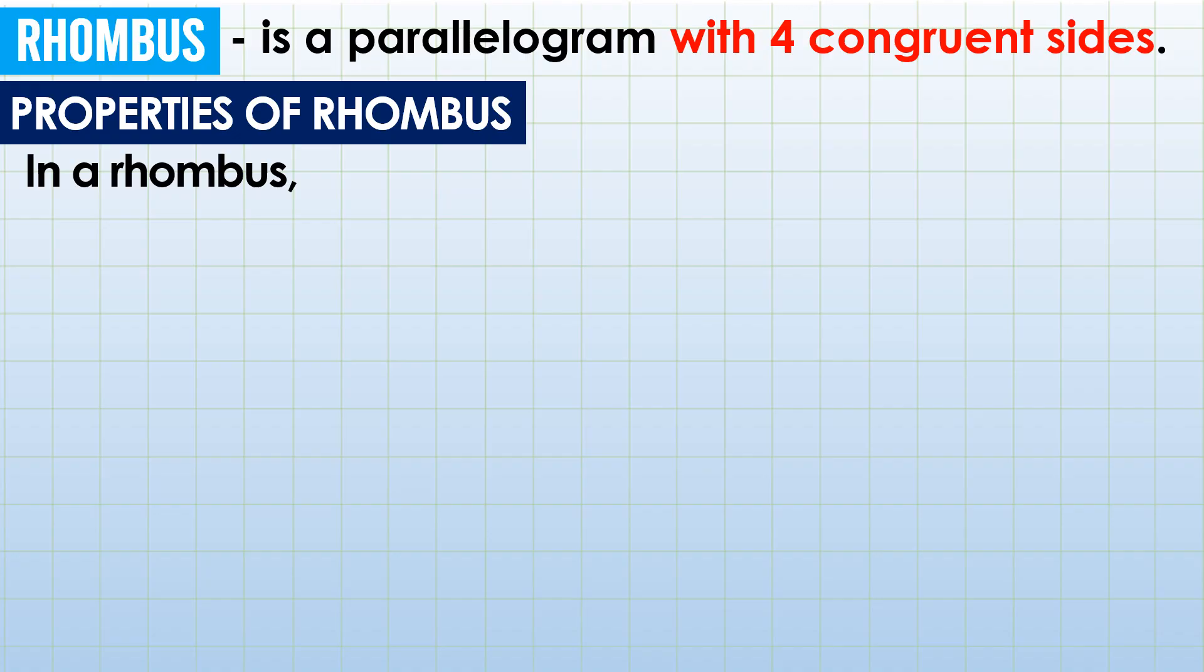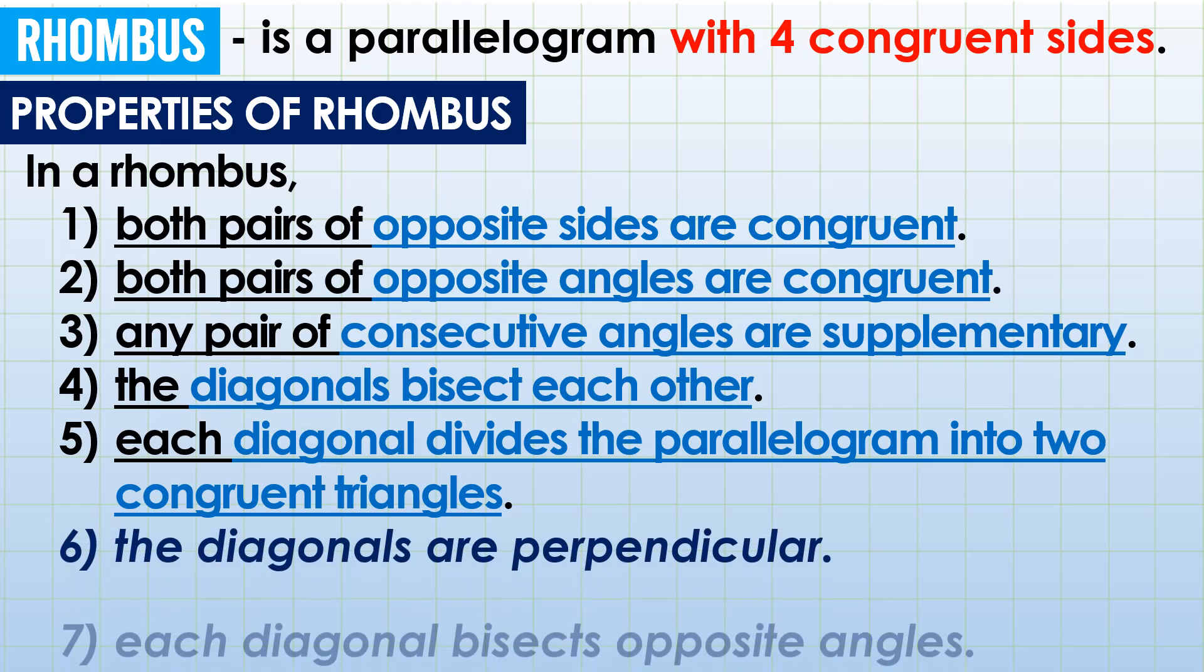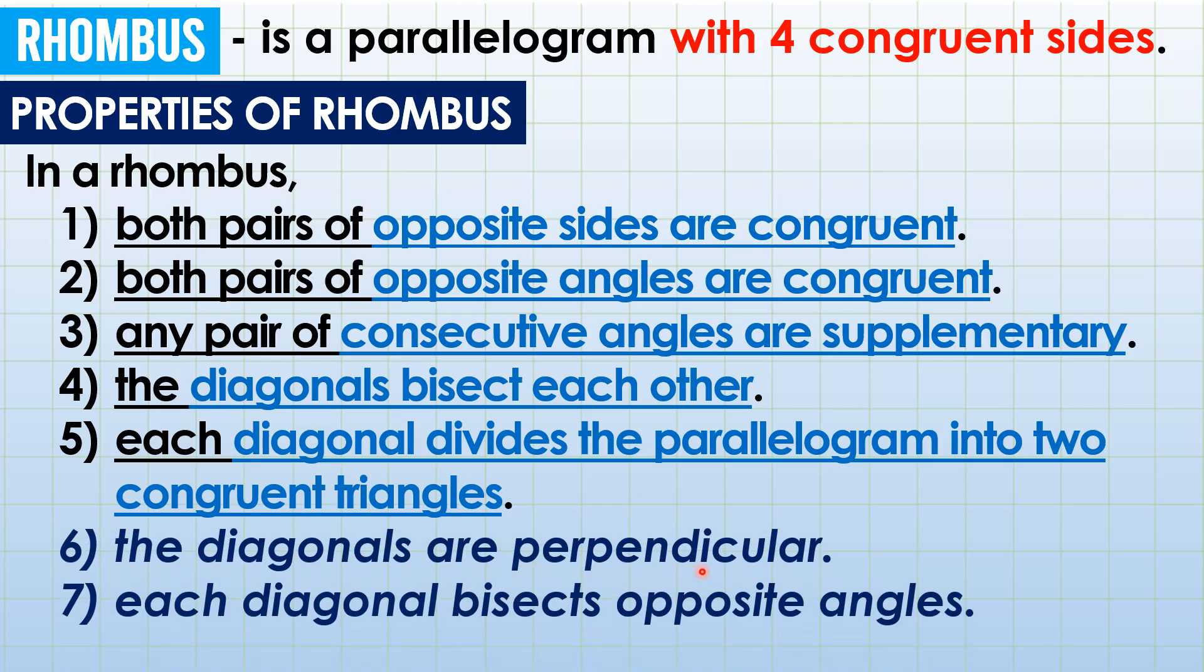Now, for the summary of the properties of rhombus: of course, the five properties of parallelograms, and also items 6 and 7. Diagonals are perpendicular, and diagonals bisect opposite angles.